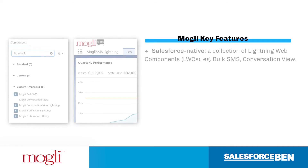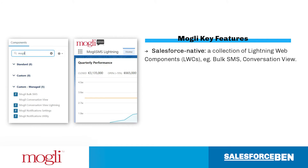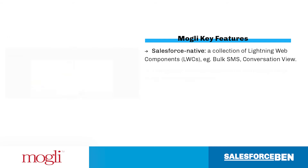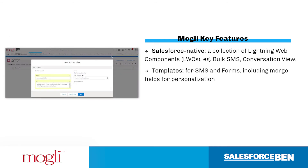Let's begin with emphasizing that Mowgli is Salesforce native, so it's embedded in the interface your users are used to using. Mowgli comes with a collection of Lightning web components, such as a component for managing bulk SMS, and another one that's a conversation view that can be added to your record pages, and many more. Create your own templates for both SMS and forms.